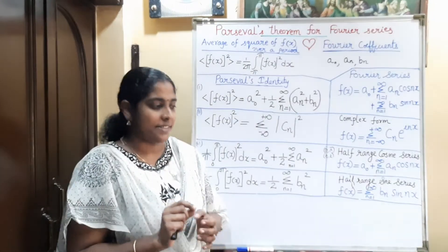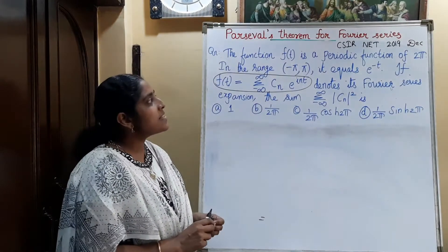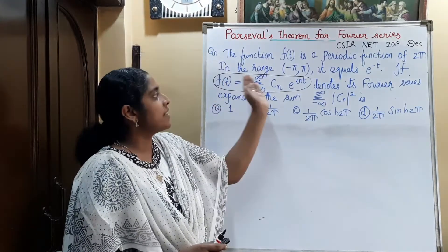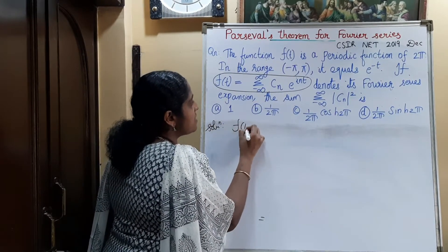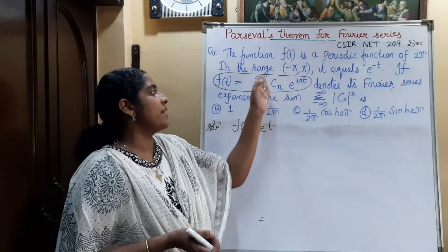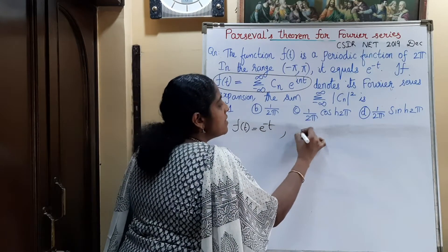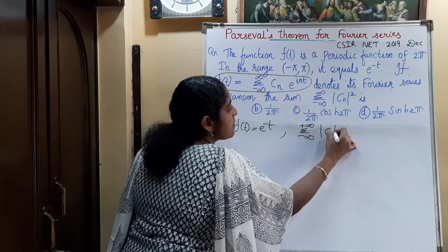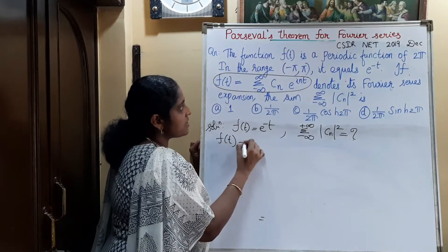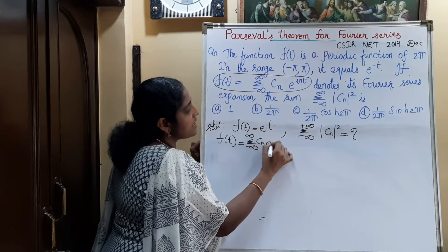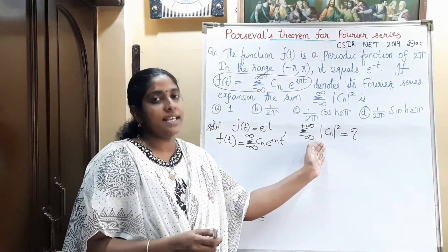Let us see one problem that will make it more clear — a question from the CSIR NET examination of December 2019. The function F(t) is a periodic function of period 2π, and in the range −π to π it equals e^(−t). If F(t) = Σ(n=−∞ to +∞) cₙ e^(int), then what is Σ(n=−∞ to +∞) |cₙ|²?